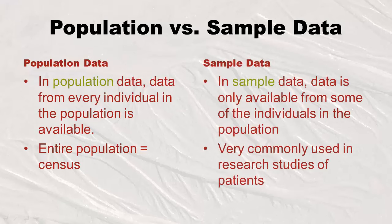In sample data, the data are only available from some of the individuals in the population. If that researcher had only taken some from the email list of professors, she would have been surveying a sample. This is very commonly used in research studies, especially with patients. Why would you need to get every kidney dialysis patient? You only need a sample — and that's because we have statistics.